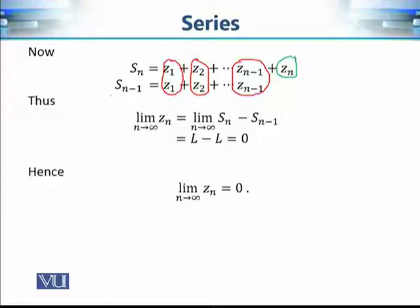Since the series converges to L, the limit of the partial sums sₙ is L. Also, the limit as n approaches infinity of sₙ₋₁ is also L, because it is essentially a translation of the same sequence of partial sums. Therefore, L − L = 0, which implies the result that the limit as n approaches infinity of zₙ equals 0.